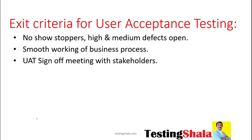Once all these criteria have been met, there should be a separate meeting set up, called a UAT sign-off meeting, which involves all the stakeholders to get their buy-in. When everybody is in agreement, the UAT team would sign off as part of the exit criteria. These are the three critical exit criteria when signing off UAT.